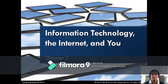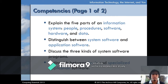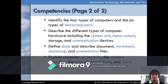Good day everyone. Today I'll be discussing information technology, the internet, and you. The competencies we will cover include: explain the five parts of an information system — people, procedure, software, hardware, and data; distinguish between system software and application software; discuss the three kinds of system software programs; and distinguish between basic and specialized application software.